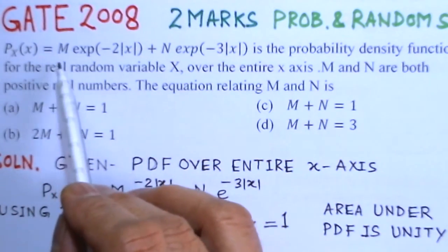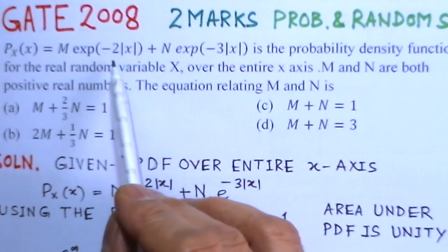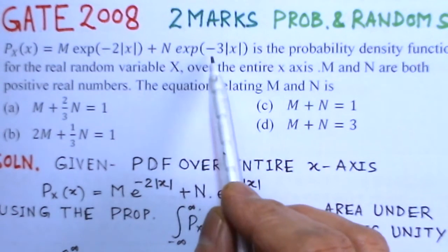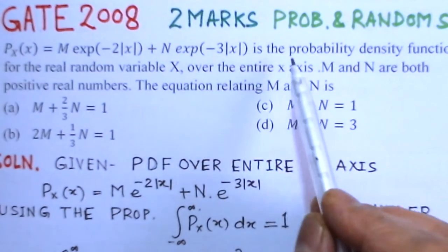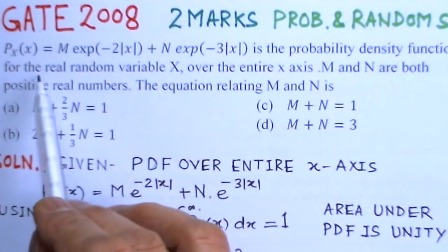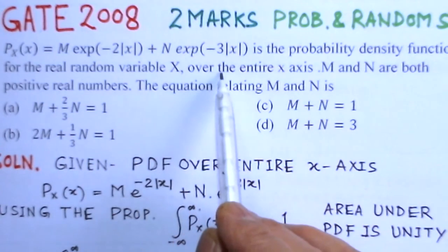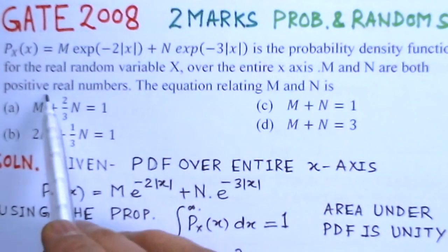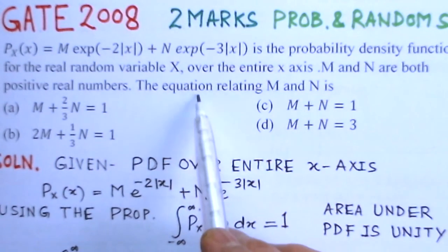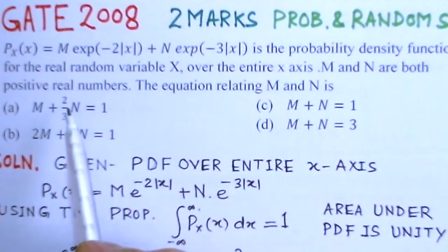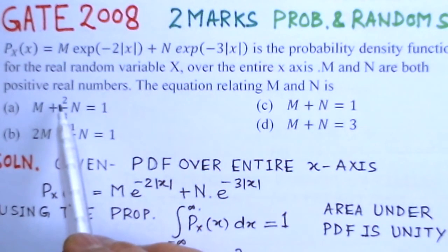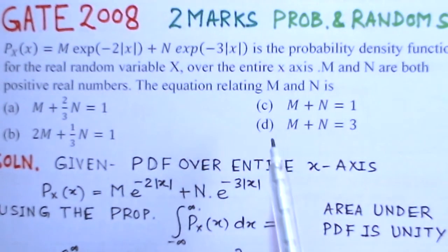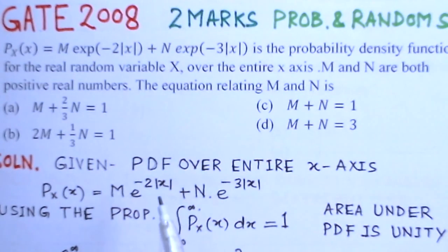p(x) equals m·e^(−2|x|) + n·e^(−3|x|) is the probability density function for the real random variable x over the entire x-axis. m and n are both positive real numbers. The equation relating m and n is asked, with four options A, B, C, and D given.